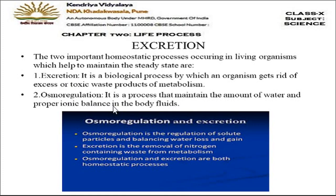Now let's start the next life process: excretion. Excretion means removal of waste products from the body. Two important homeostatic processes — which keep the body in a balanced state — are excretion and osmoregulation. Excretion is the removal of toxic waste substances from the body, and osmoregulation maintains the amount of water and ions in the body.